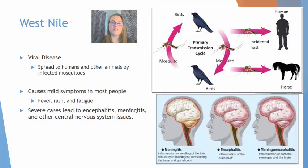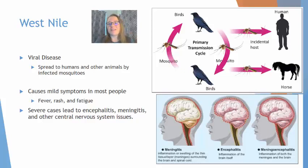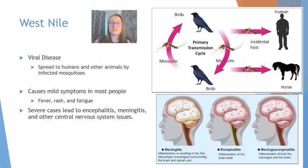West Nile disease is a virus also spread through mosquitoes. The normal transmission cycle is between mosquitoes and birds as the primary and intermediate hosts, but mosquitoes can incidentally infect humans or horses, both of which tend to show significant symptoms. Typically symptoms are mild — fever, rash, and fatigue — however severe cases can lead to encephalitis (swelling of the brain stem) or meningitis (swelling of the lining around the brain), causing severe central nervous system damage.